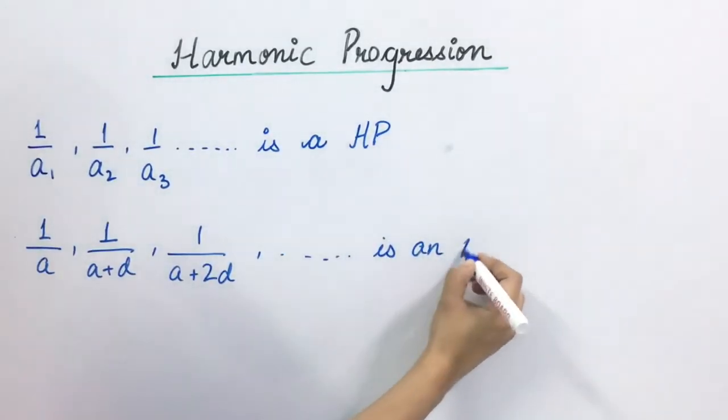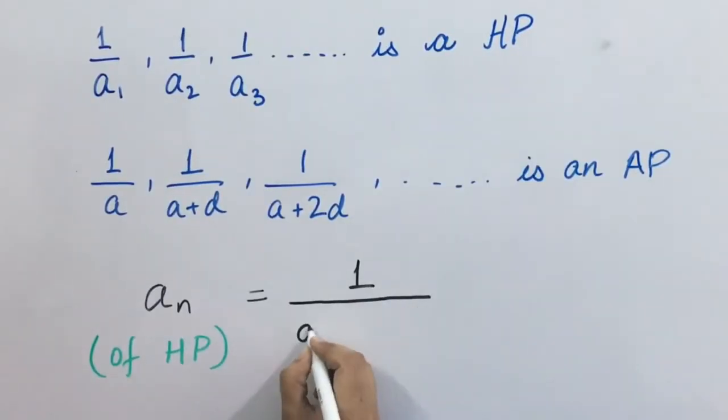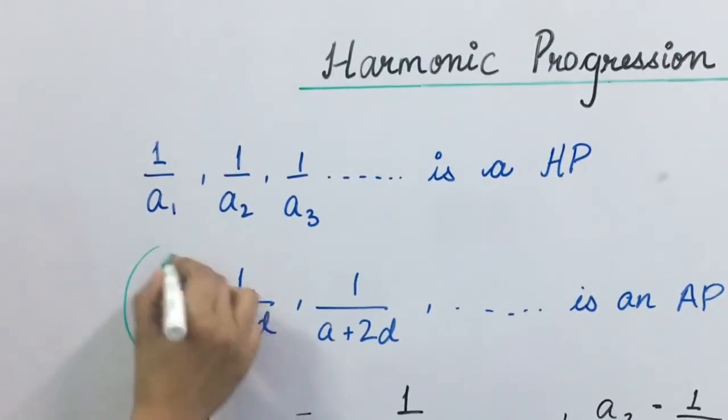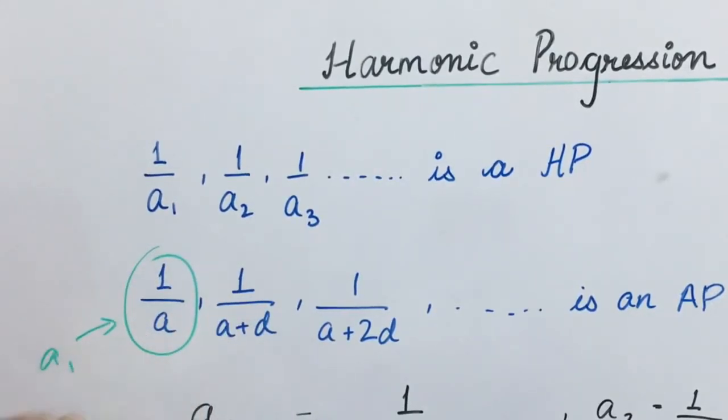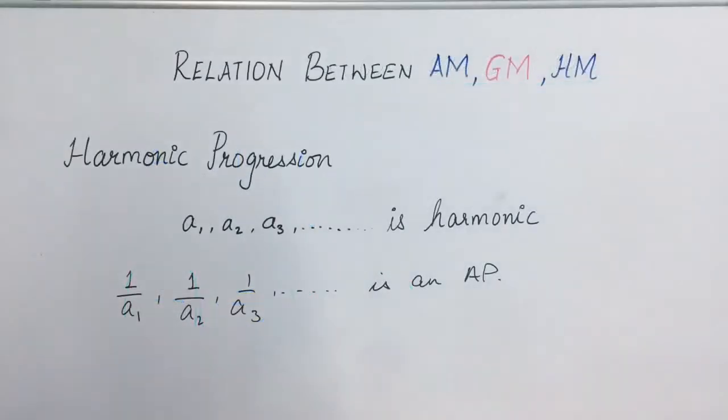The nth term of HP will be reciprocal of nth term of AP, that is 1 upon A plus N minus 1 into D. The first term of HP will be 1 upon A, A2 will be 1 upon A plus D, A3 will be 1 upon A plus 2D and likewise. Let us understand this concept with the help of an example.